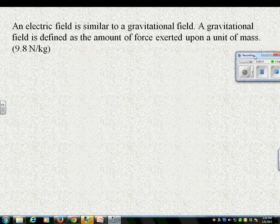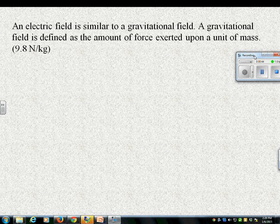Much of this that you're going to write down here, if you choose, is basically what I talked about yesterday. Much of this is going to be reviewed from yesterday. An electric field is similar to a gravitational field. We talked about that yesterday. A gravitational field is defined as the amount of force exerted upon a unit of mass. And on Earth, it's equal to 9.8 newtons per kilogram.